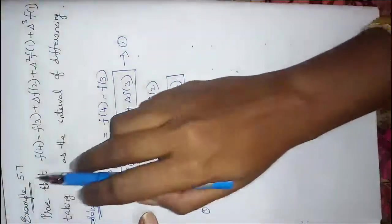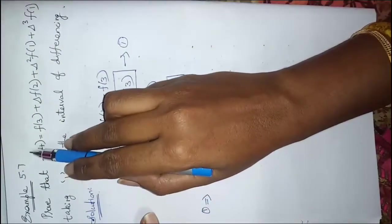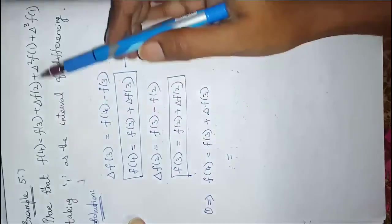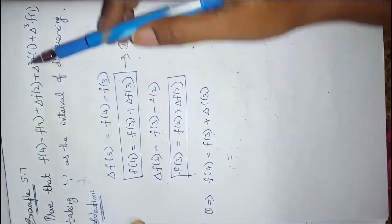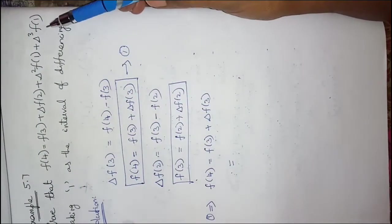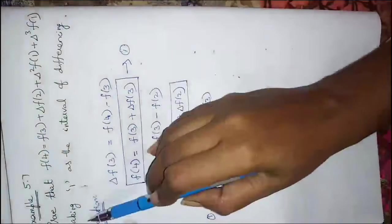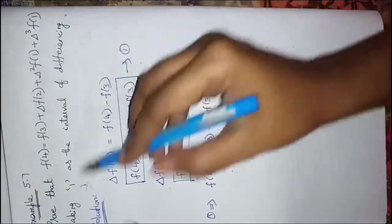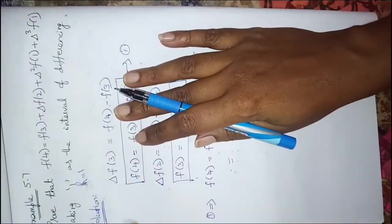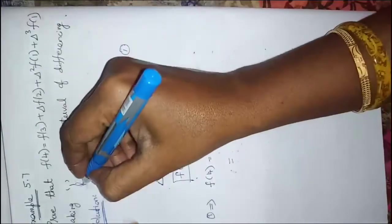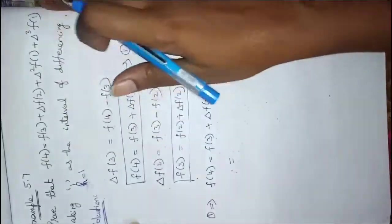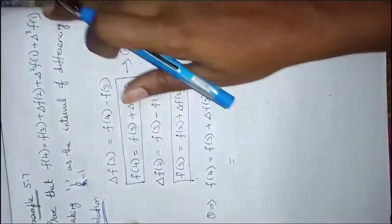Hi children. Next week we will see example 5.7: Prove that f(4) = f(3) + Δf(2) + Δ²f(1) + Δ³f(1), taking 1 as the interval of differencing. That means h = 1, and we will get f(4) equal to a sum of 4 terms.